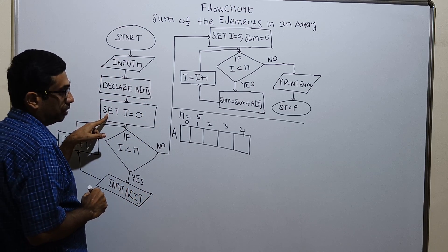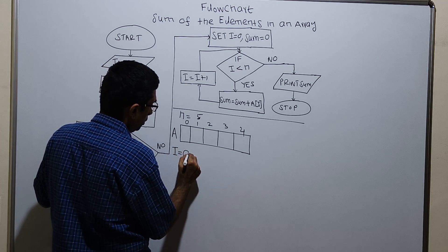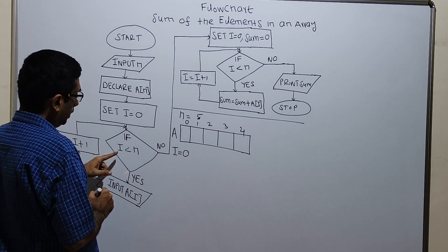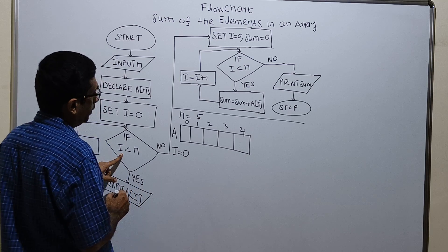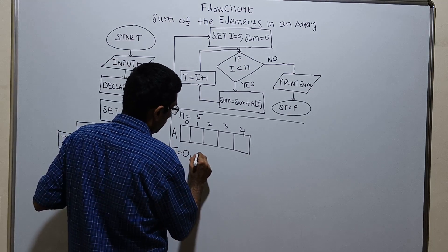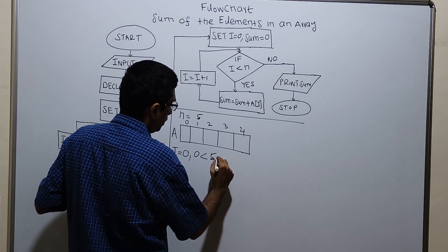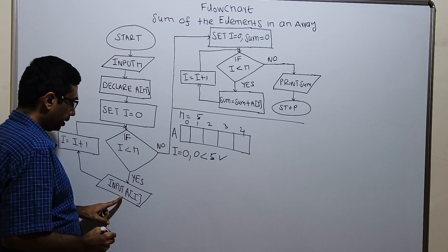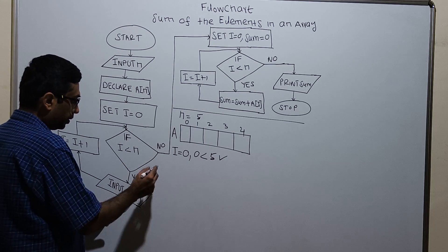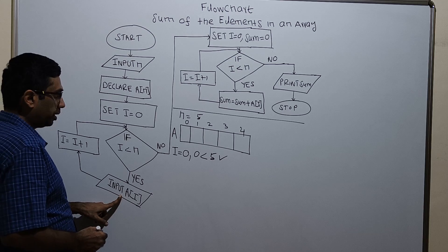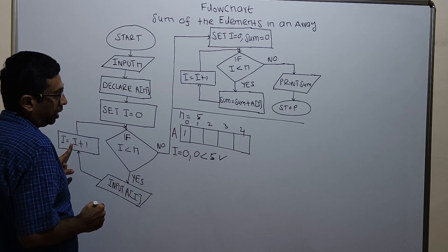Set i equal to 0. I am introducing a variable i equal to 0. I am checking the condition: 0 less than n. What is the value of n? n equal to 5. 0 less than 5, this is true. Then input a of i, so a of 0. Value for a of 0 will get stored. For a of 0, I am giving value 1. i equal to i plus 1.